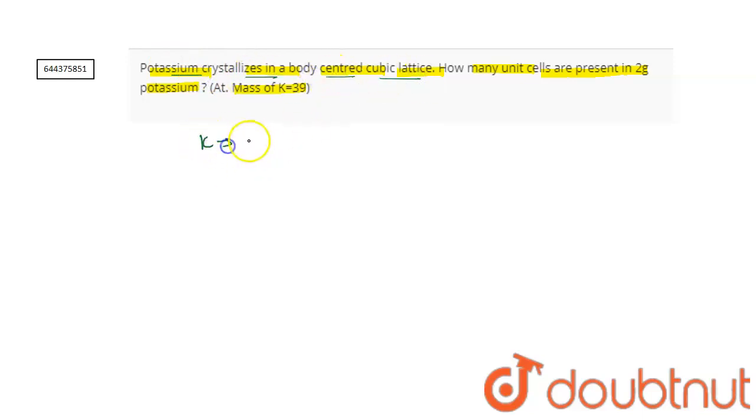And as we know, the z-value of BCC means in each BCC lattice there are two potassium atoms present. So now we solve this question by unitary method.